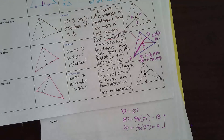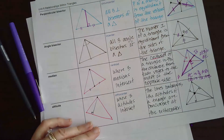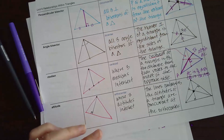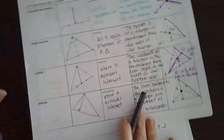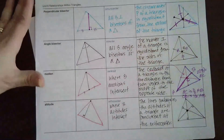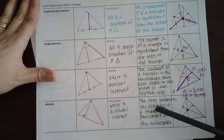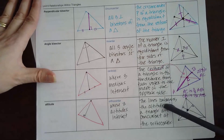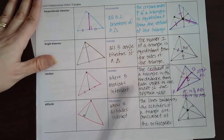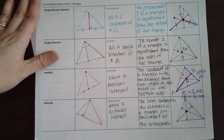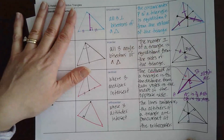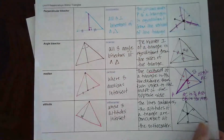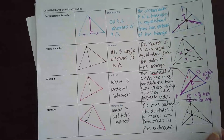This reference sheet is meant to give you a quick study tool so you know the difference between all the triangle centers — circumcenter, incenter, centroid, and orthocenter — and what information you would gather from each one. The centroid is probably the most unique, so pay attention to that. This will be important for your end-of-unit test and any quizzes.